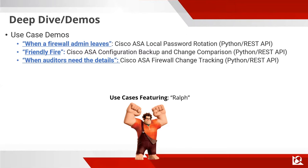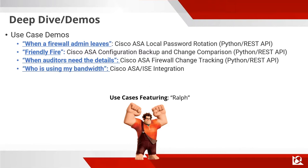Then we'll talk about when auditors need details — how to give auditors information about who made changes to the firewall without handing them a spreadsheet full of change control numbers. Just pull all that data back, send it in a report periodically, so they really never need to ask you again. We'll also cover the use case of who's using all the bandwidth — with COVID, video conferencing has caused a lot of bandwidth usage, so that's an important use case too.